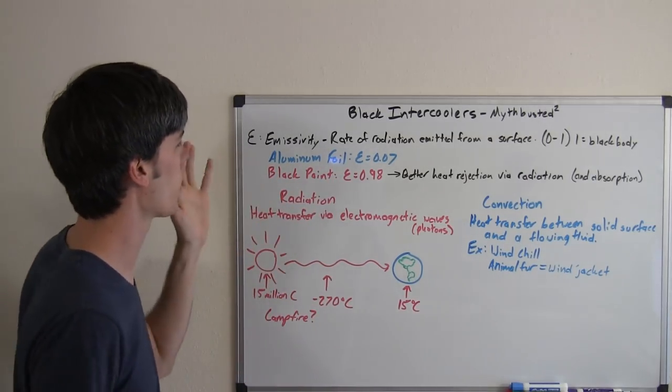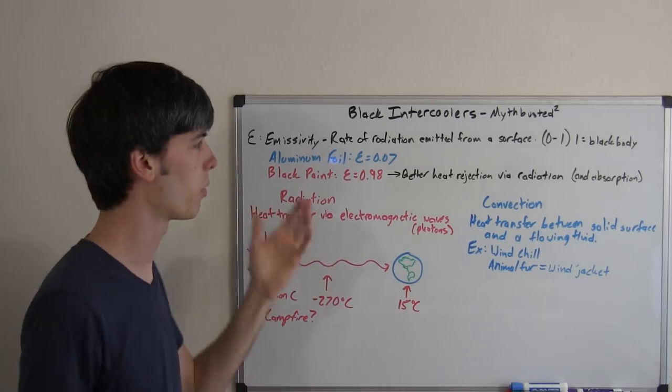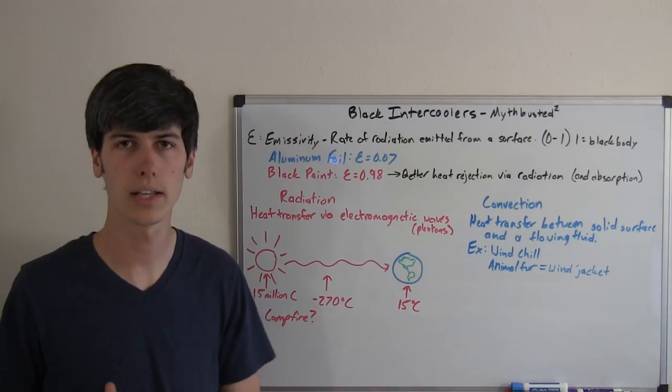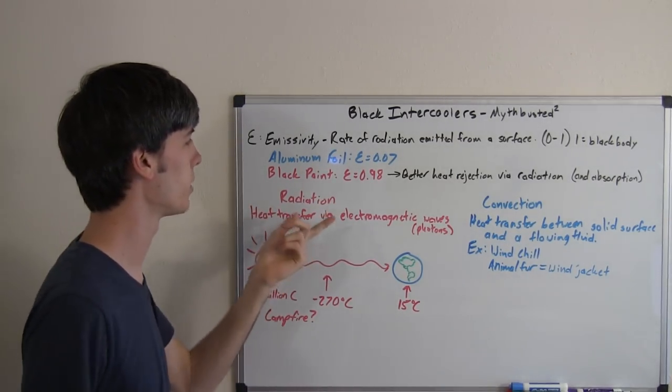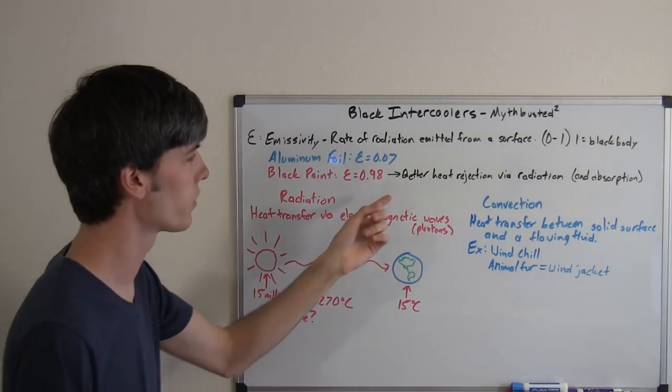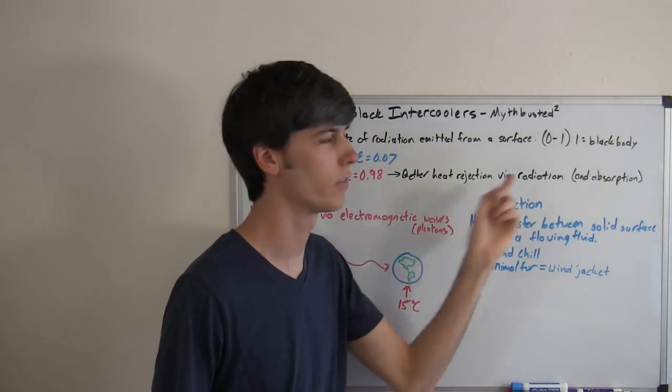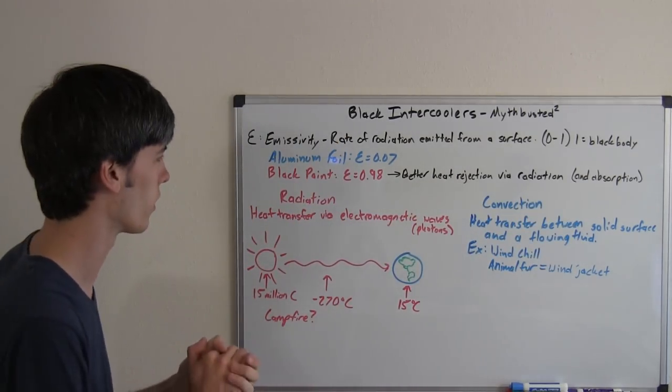So the two things we're talking about, aluminum and black paint. So aluminum foil has an emissivity of 0.07. I pulled that directly out of that book that I was just showing you that I'm so passionate about. Black paint has an emissivity of 0.98. So very close to a black body, which means it will have much better heat rejection via radiation. It'll also have better heat absorption via radiation, but we'll get into that later.